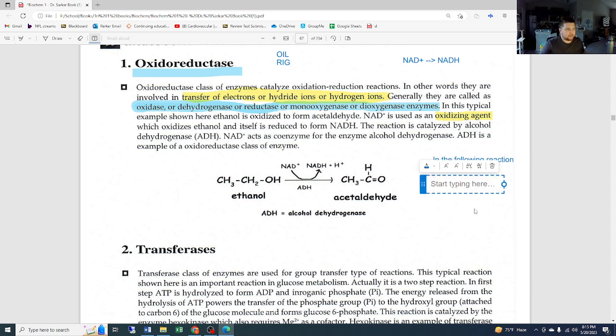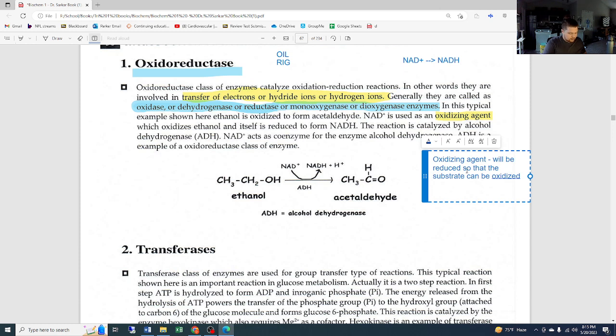So let me repeat that: the oxidizing agent will be reduced so that the substrate can be oxidized. This is the kind of way they will ask that question. For example, in the following reaction—referring to this one here up to the side—which of the following is the oxidizing agent? The answer is going to be NAD+.